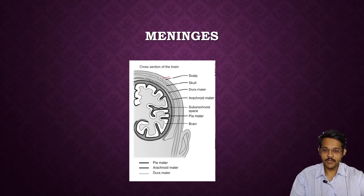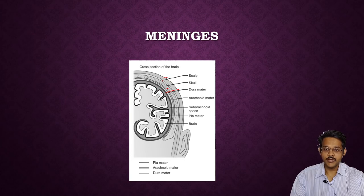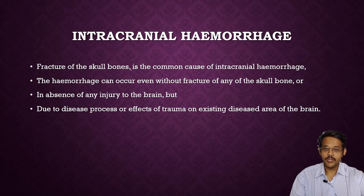In cross-section, the outermost layer is the scalp, then the skull with outer table and inner table, then the dura mater closely attached to the skull. Below that is the subdural space, then the arachnoid mater, then the subarachnoid space which extends into the brain convolutions, and finally pia mater which is close to the surface of the brain.